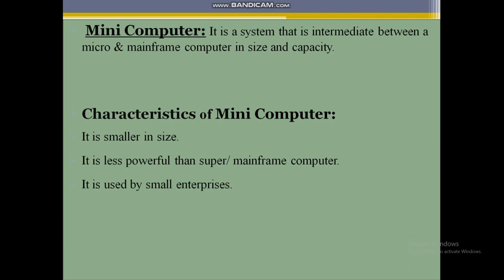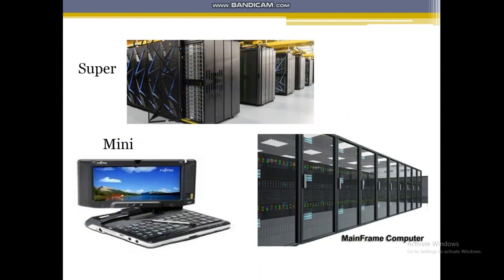Now the last type is the mini computer. A mini computer is a system that is intermediate between a micro computer and a mainframe computer in size and capabilities. Mini computers include what we call PCs, laptops, or desktops. Within mini computers there are further types like handheld computers — that is, mobiles or tablets. Mini computers are smaller in size and less powerful than supercomputers or mainframe computers.